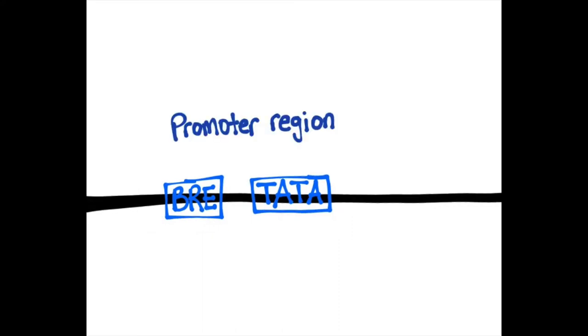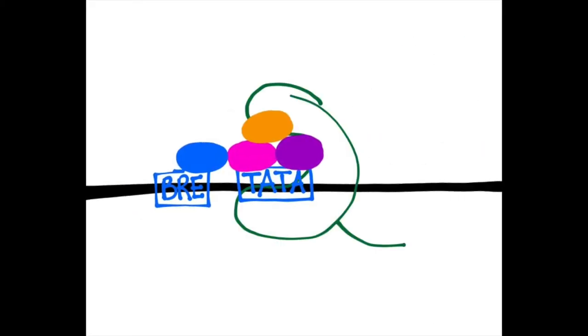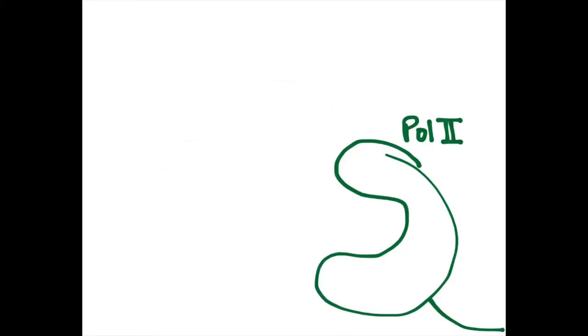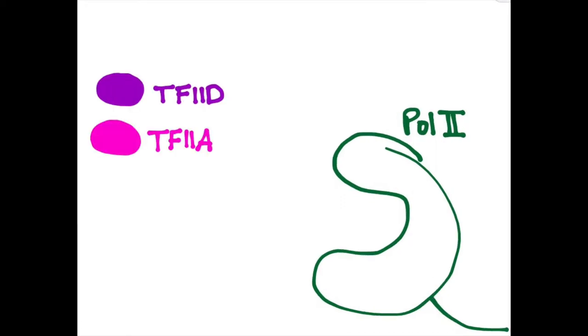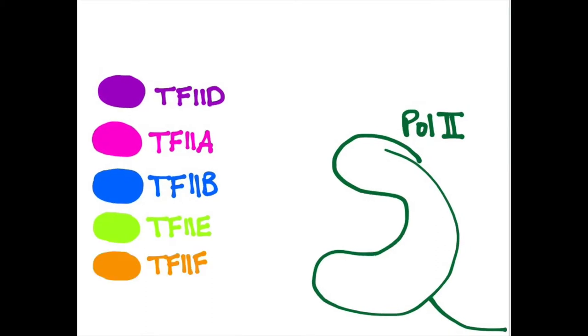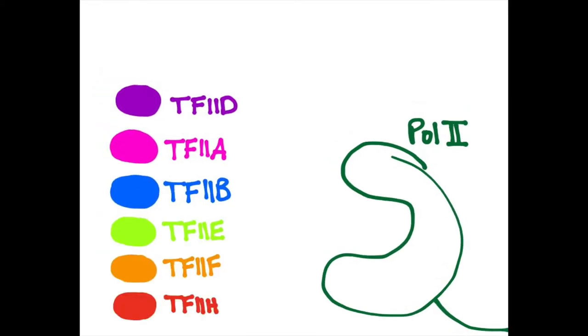Before we talk about how this phosphorylation occurs, we should discuss the general transcription factors that assemble into the initiation complex. Transcription factors interact with the DNA at the promoter and recruit the rest of the initiation complex to begin transcription. The class II pre-initiation complex contains polymerase II and six general transcription factors: TF2D, TF2A, TF2B, TF2E, TF2F, and TF2H. We will tell you the conclusions from their gel mobility shift assay regarding binding order.